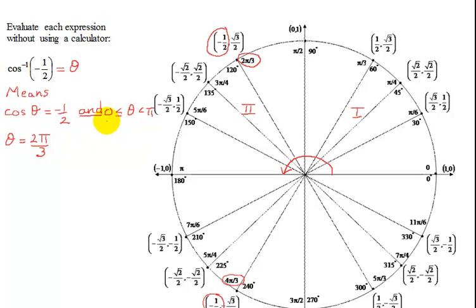So remember, an inverse trig function, you have to look at the restrictions. You can only have at most one answer, so in this case, what's the answer? Theta equals two-pi over three.